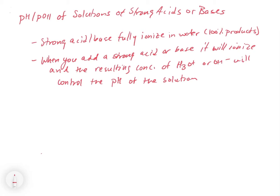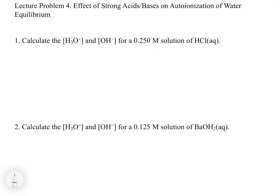So whatever concentration you put in for HCl, for example, will be the concentration of H3O+ in the solution. So let's take a look at an example of this. This example says, calculate the concentration of H3O+ and OH- for a solution of 0.250 molar HCl.